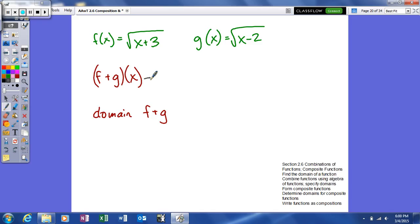So again, it's important that you understand that means f of x plus g of x. Basically what we're doing is adding our two functions together. Our f function is given to us as the square root of x plus 3, and our g function is given to us as the square root of x minus 2.